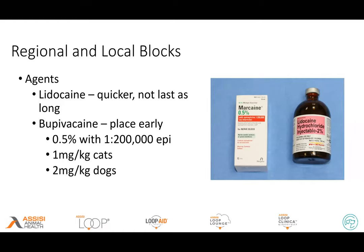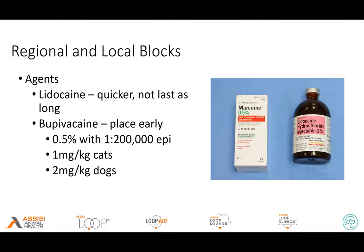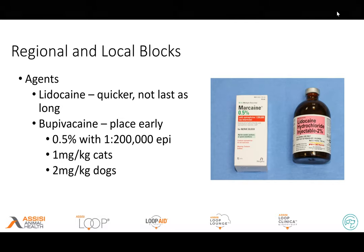With my bupivacaine I go no more than 1 mg/kg on cats — so an 11-pound cat is 1 cc total. If I've used anything for intubation — a little drop of lidocaine on the larynx — I take that out of the total dose. I can use a little bit more on dogs. Combining the two to get the quickness of lidocaine with the longer-acting bupivacaine doesn't really help out that much. So when you've got your patient: identify the areas you're going to be working on, get your blocks in early, get your X-rays, get your blocks in — that way in five to ten minutes you'll have your bupivacaine working.